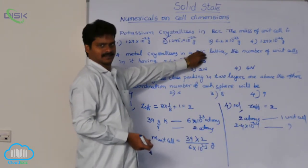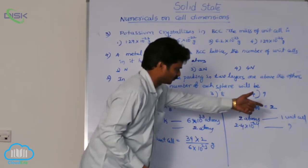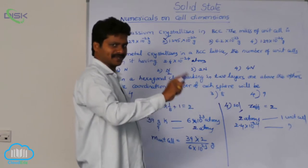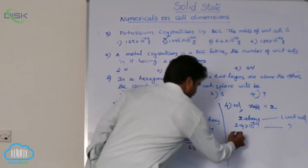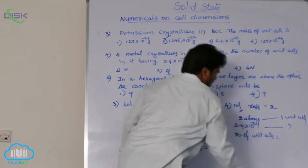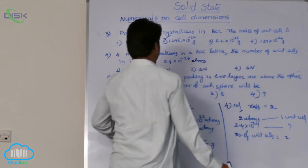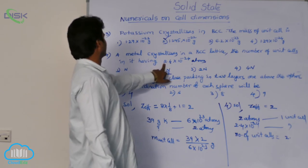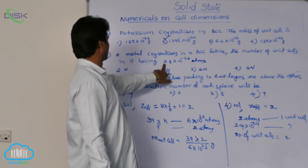Note that the given value 2.4×10⁻²⁴ is the number of atoms, not grams. So if 2 atoms form 1 unit cell, how many unit cells are formed by 2.4×10⁻²⁴ atoms? By cross-multiplication, the number of unit cells equals 2.4×10⁻²⁴ divided by 2.